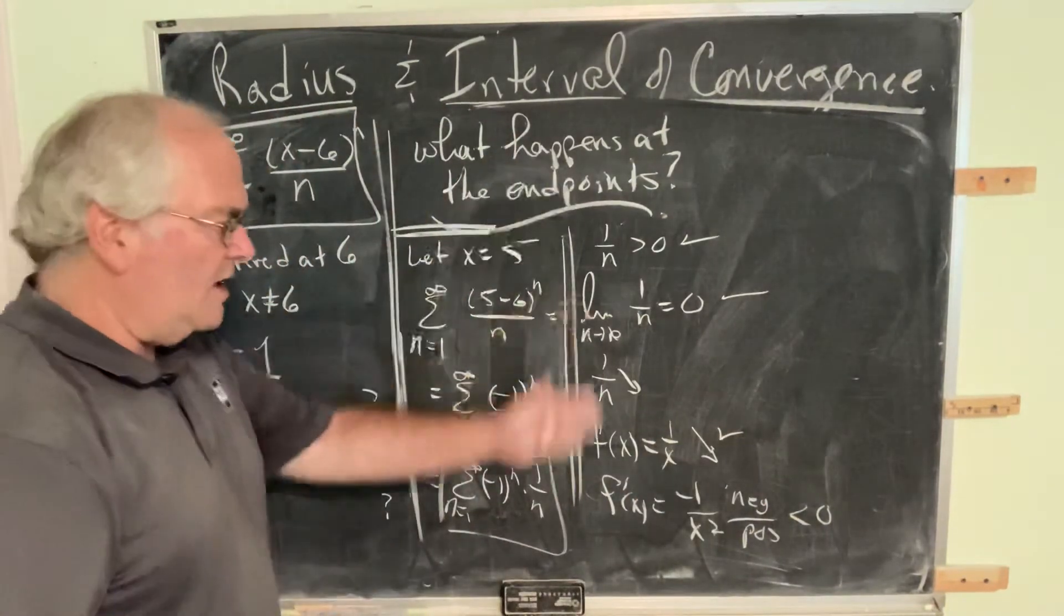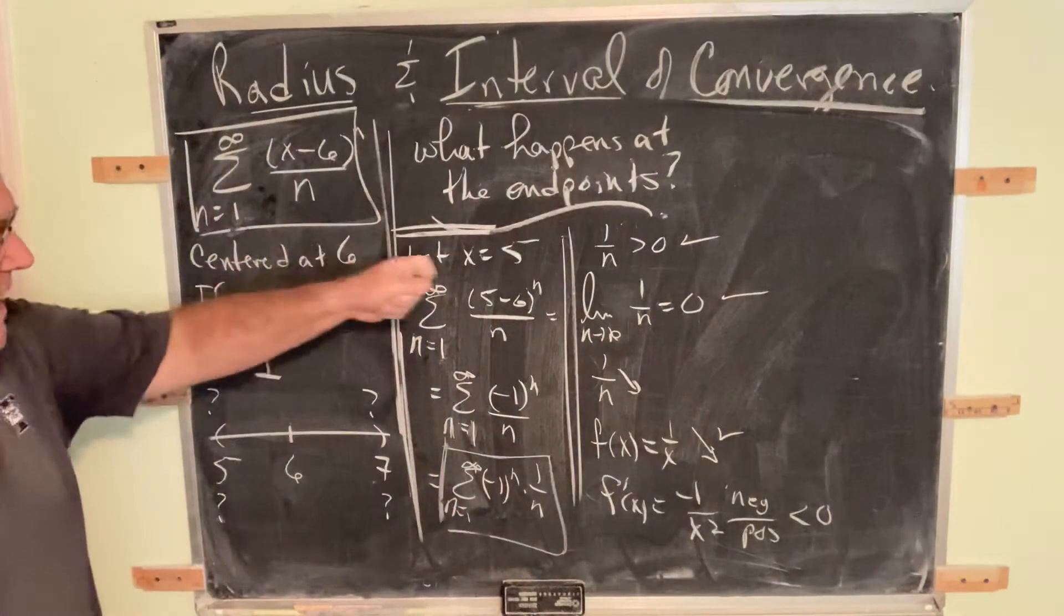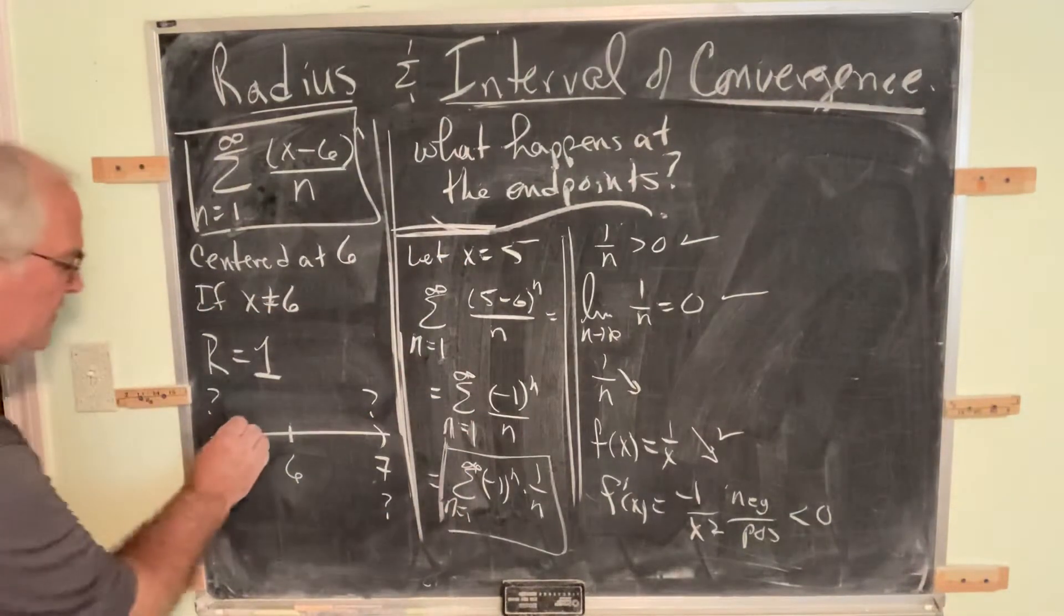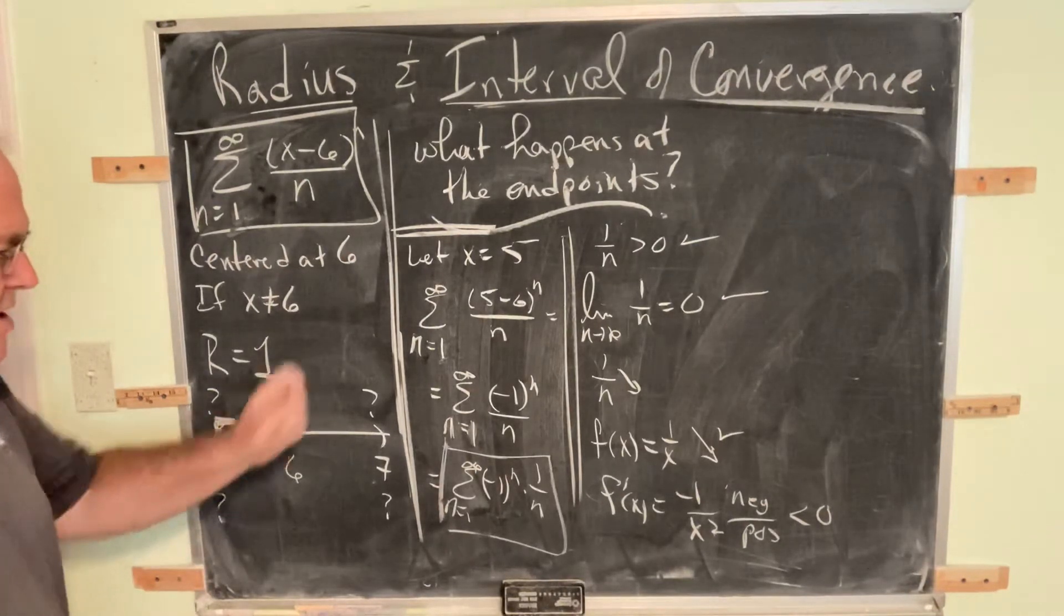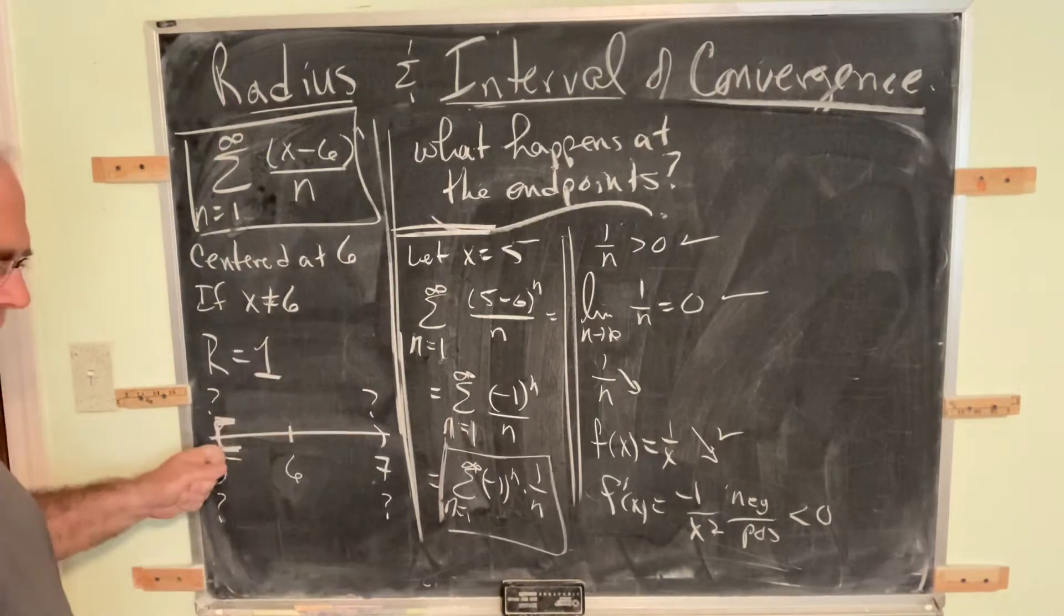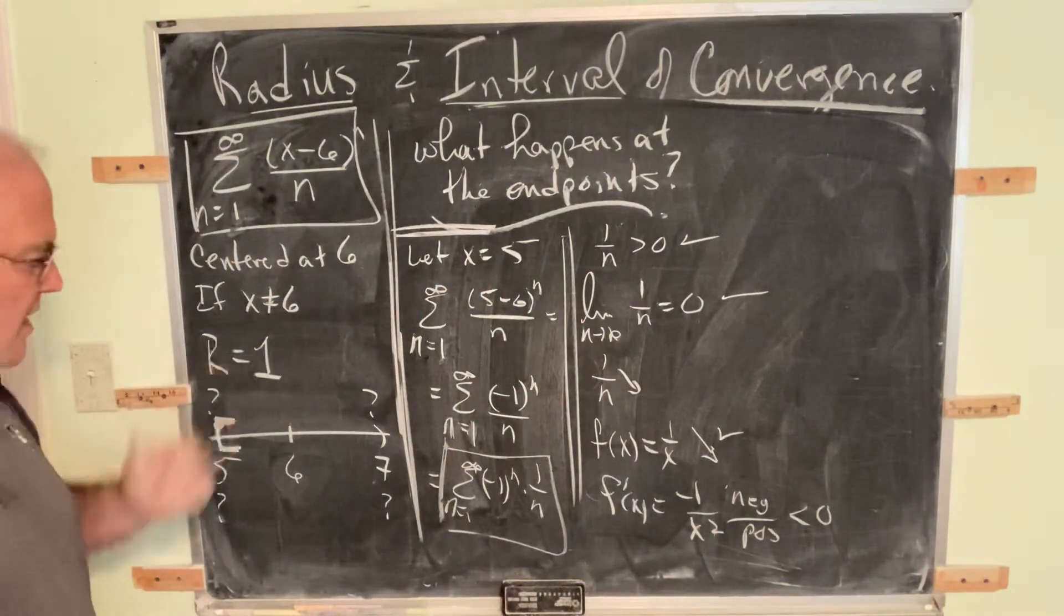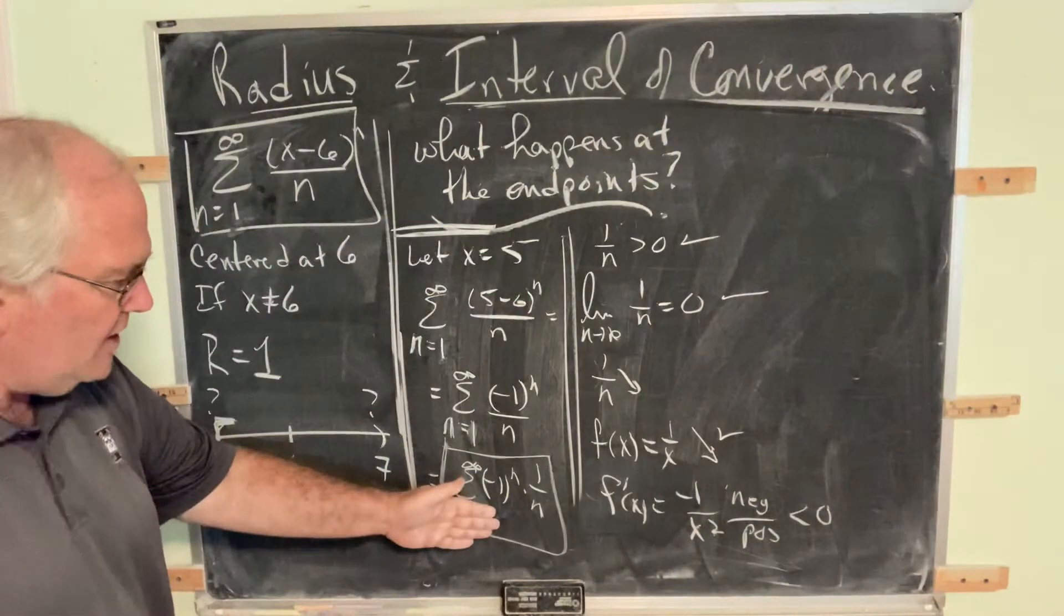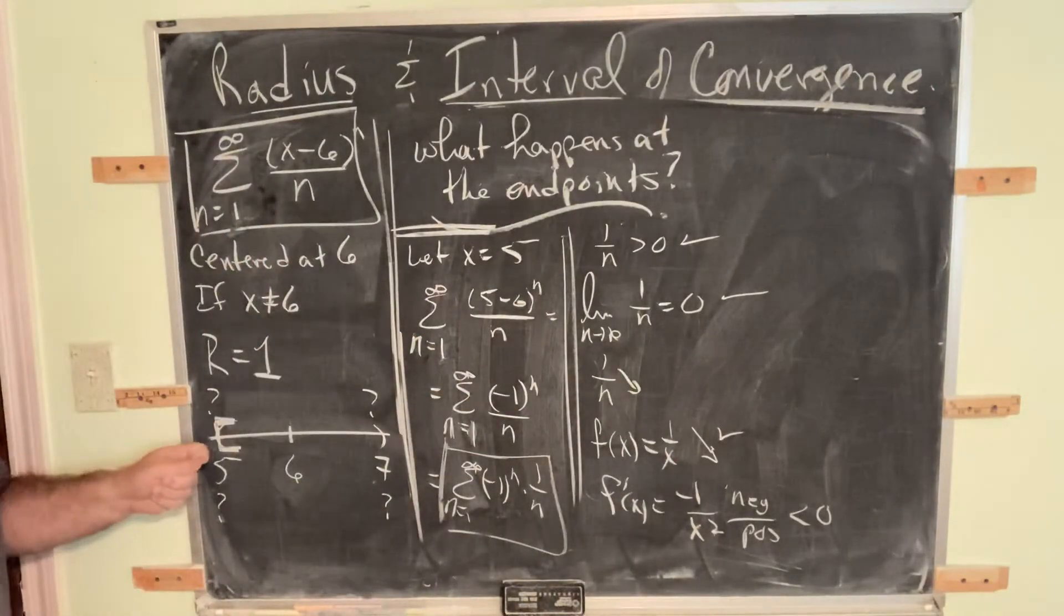So by the alternating series test, this series converges, which means at x equal 5, it converges. At x equal 5, it is a closed interval. If you get converges at that endpoint, it is a closed interval. If you get diverges at that endpoint, it is an open interval. That's all there is to it. So at 5, you generate the alternating series, apply the alternating series test, it converges. Therefore, 5 is a point of convergence.